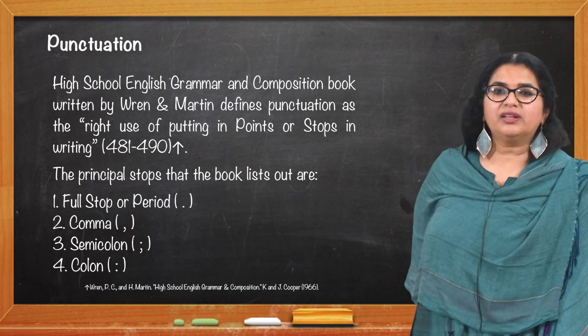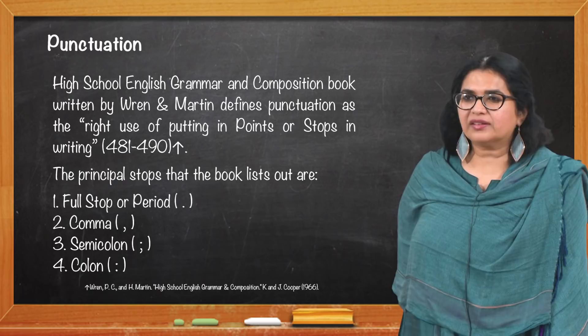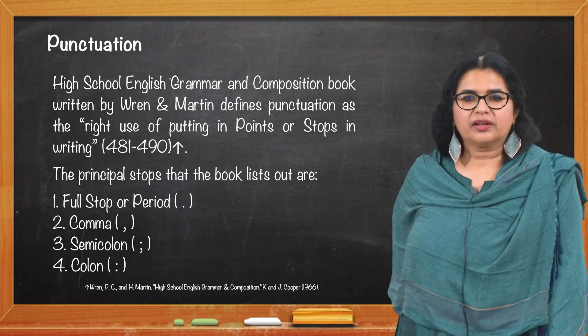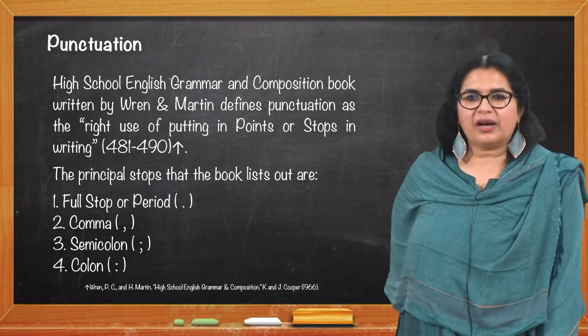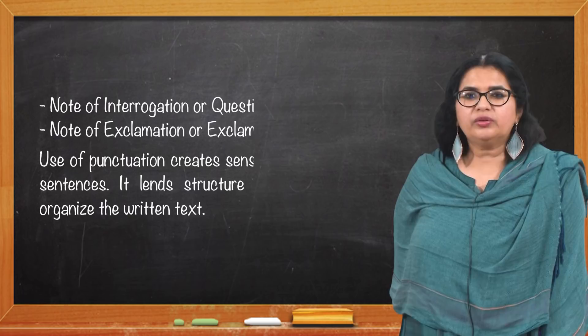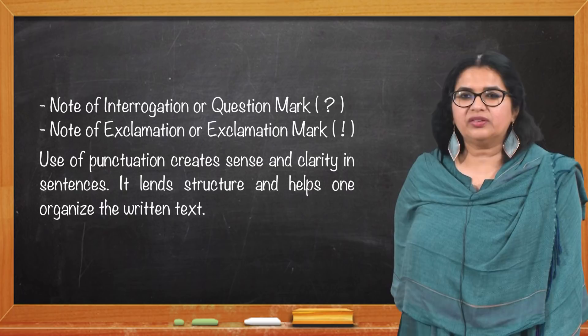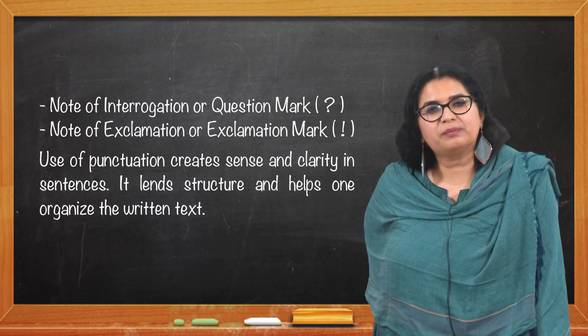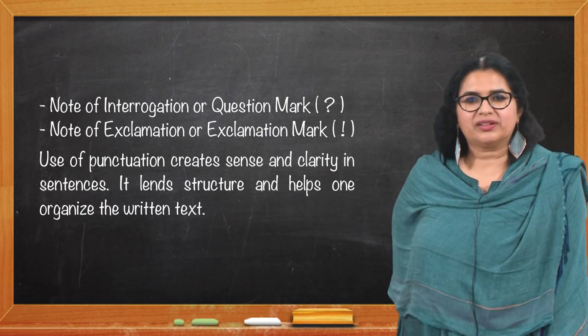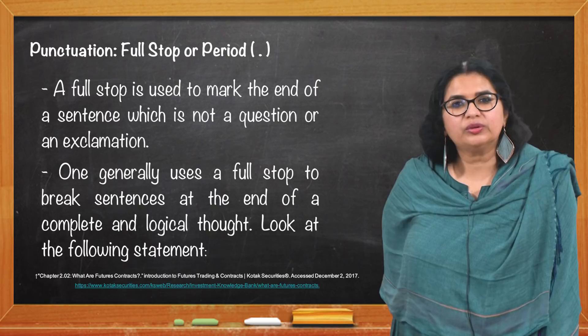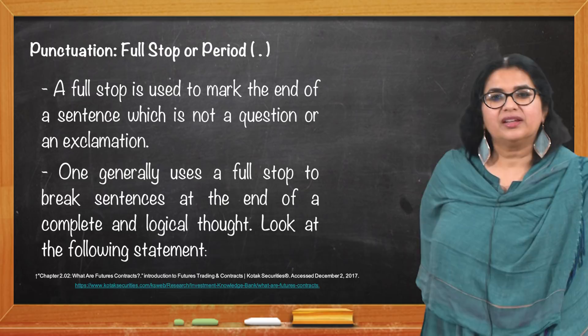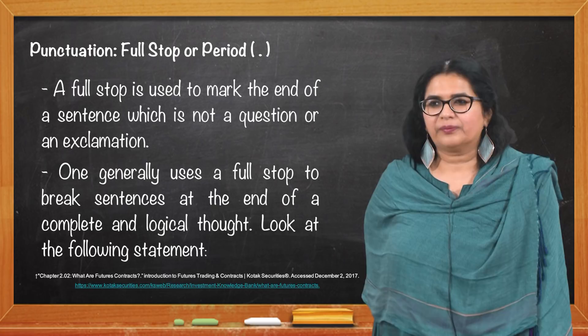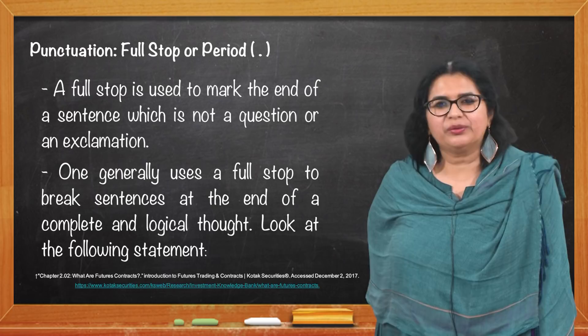The principal punctuation stops listed are: full stop or period, comma, semicolon, colon, note of interrogation or question mark, and note of exclamation or exclamation mark. Use of punctuation creates clarity in sentences; if misplaced, they may lead to a lot of confusion. First, the full stop or period is used to mark the end of a sentence — the most commonly used punctuation mark, placed at the end of a sentence that is not a question or exclamation.